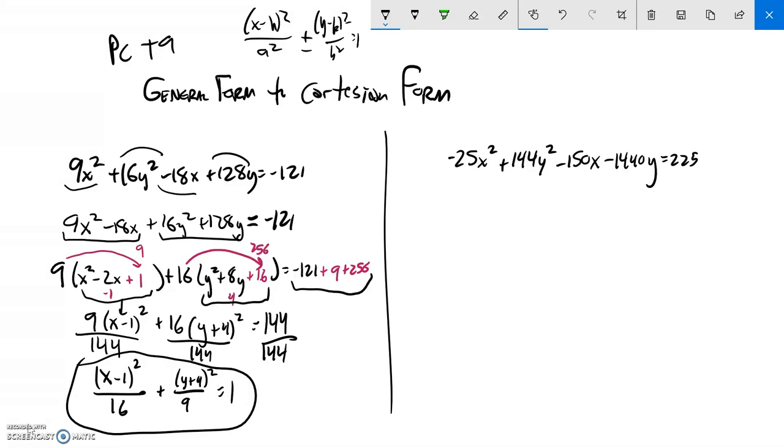All right. So similarly, I'm going to do that over here. But I notice this as an x squared, a negative x squared and a positive y squared. This is probably going to be a hyperbola, since they're opposite signs. But let me deal with it. Let me get those y's together. Negative 25x squared minus 150x. Get these x's together. Plus 144y squared minus 1440y equals 225.